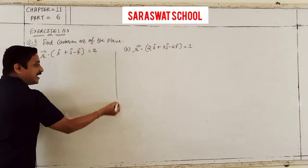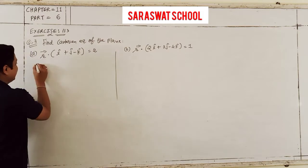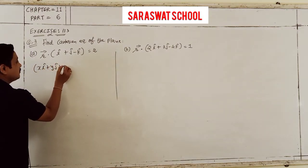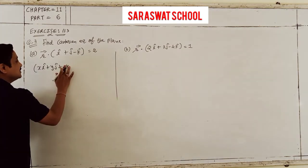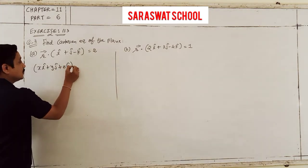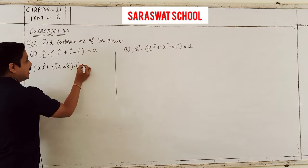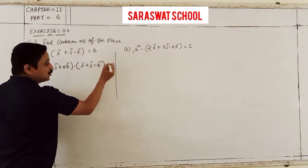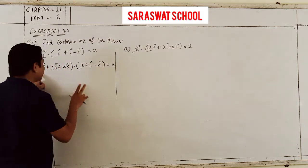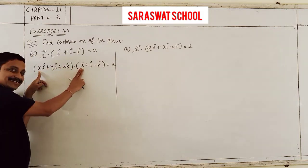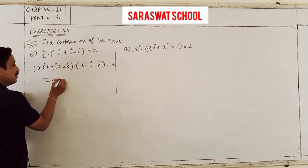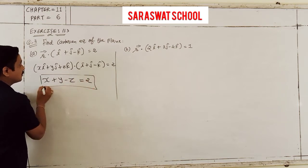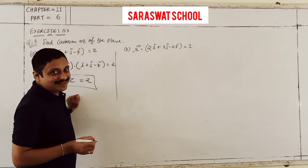I declare r as xi plus yj plus zk. Taking the dot product with (i plus j minus k), we get x plus y minus z is equal to 2. That's your Cartesian equation of the plane.